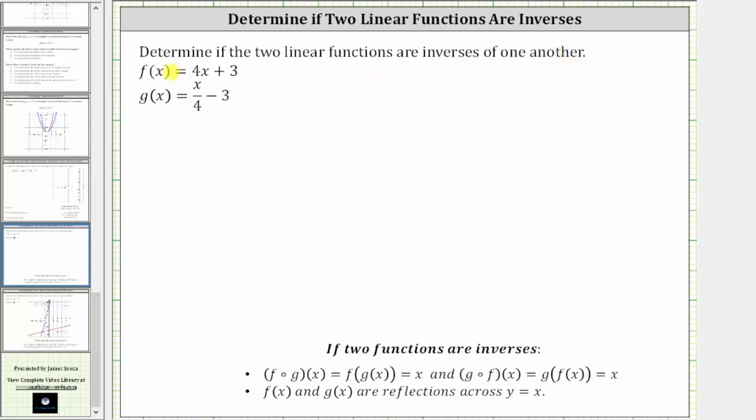So looking at the two functions, we have f of x equals four x plus three, and g of x equals x divided by four minus three. So by looking at the operations of the two functions, it does appear as if they would undo each other because notice how the function f multiplies the input by four and then adds three, and the function g of x divides the input by four and subtracts three.